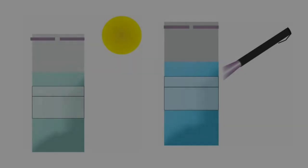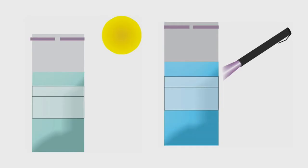To determine presence-absence test results for E. coli, view the thiobag in ambient light. To determine test results for total coliforms, view the thiobag under a UV light in a dark environment. Use a broad-spectrum UV light source such as a portable UV flashlight that is at least 365 nm.